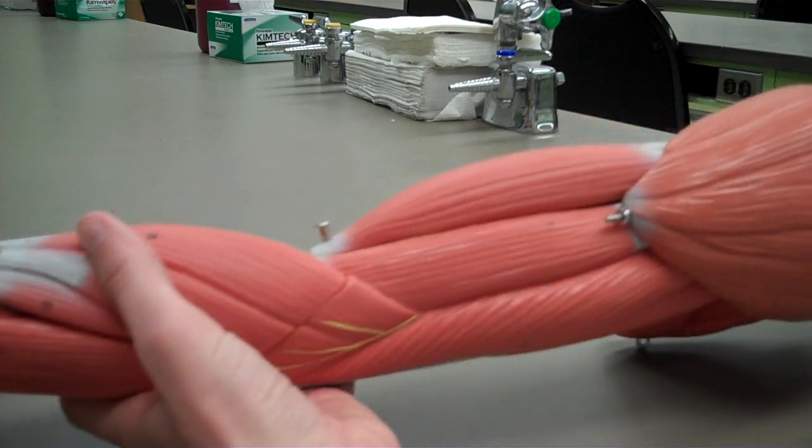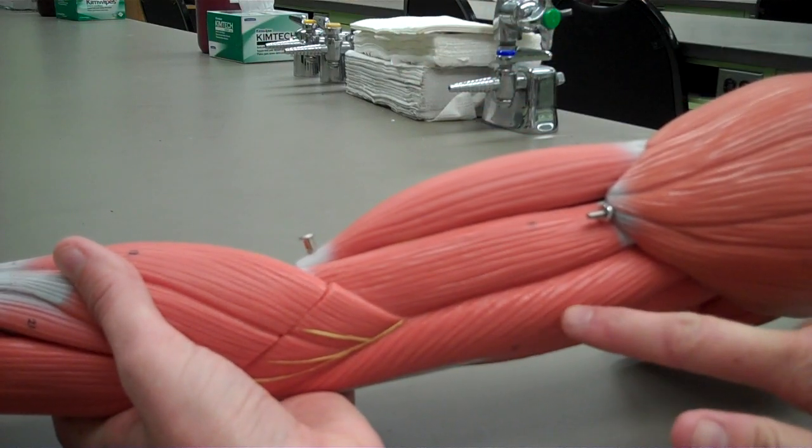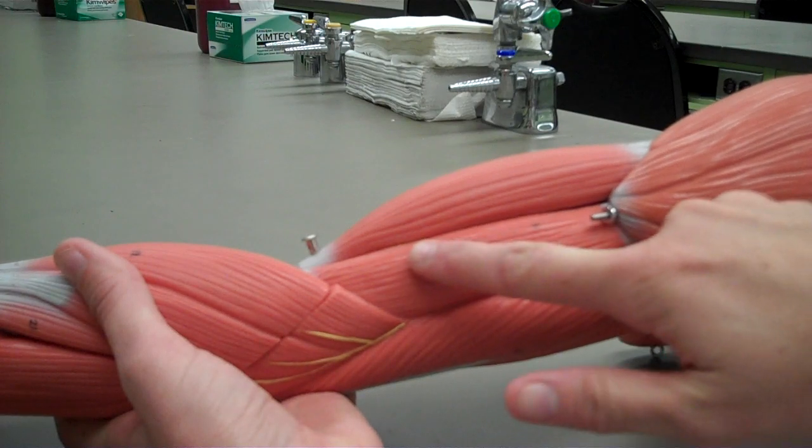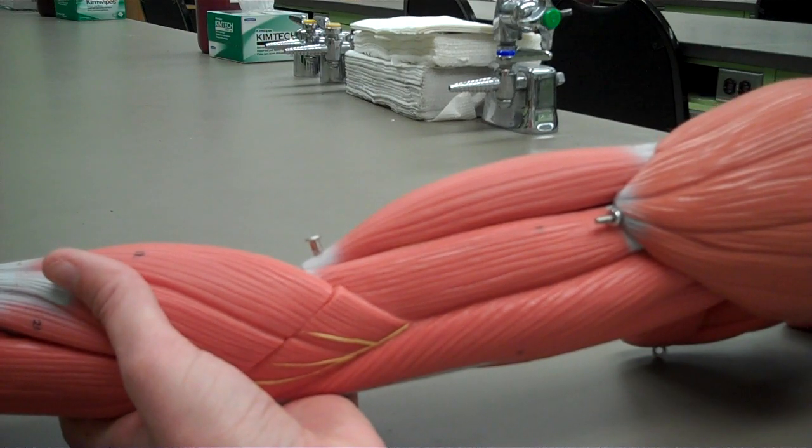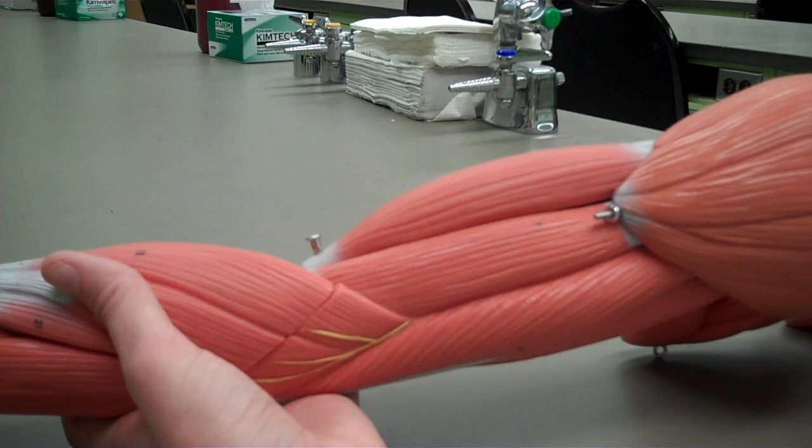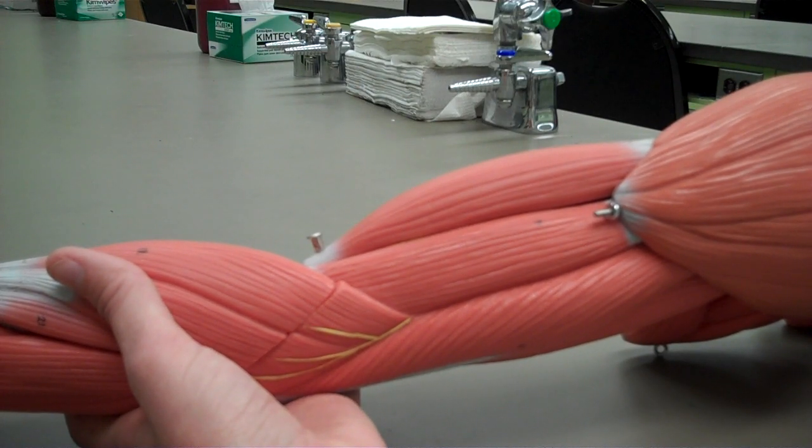In between the biceps brachii muscle and the triceps, we see this muscle, the brachialis. Its origin is on the distal anterior humerus, and its insertion is the coronoid process of the ulna. Its action is to flex the forearm.